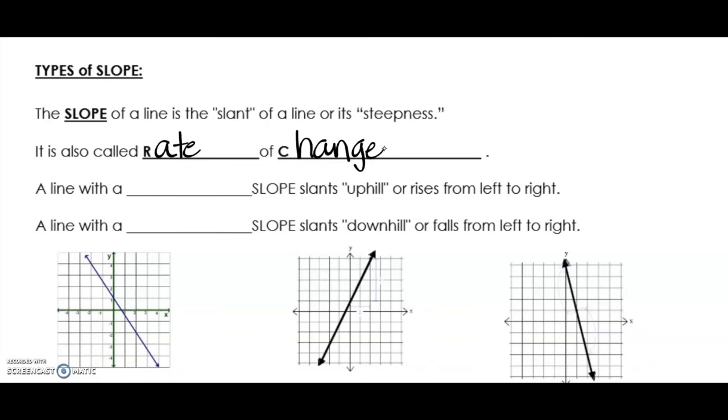A line with a positive slope is going to rise or go uphill, rise from left to right. A line with a negative slope is going to go downhill or fall from left to right.